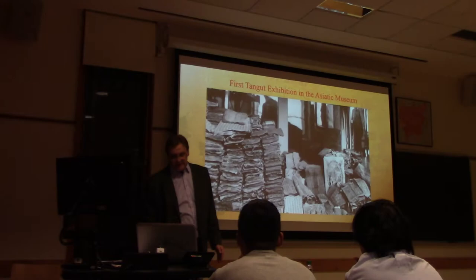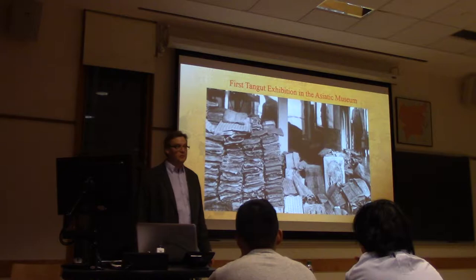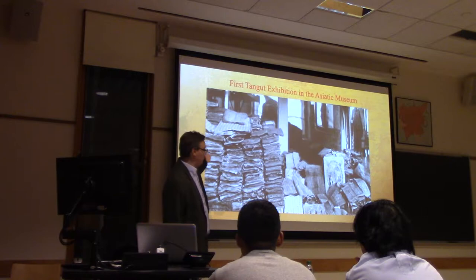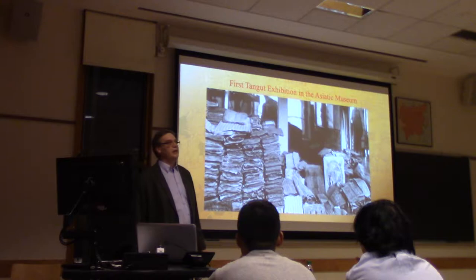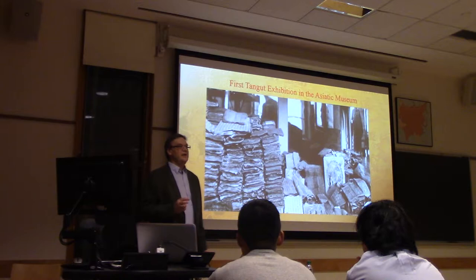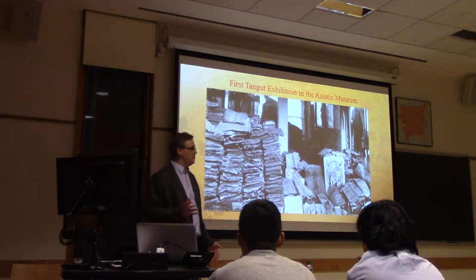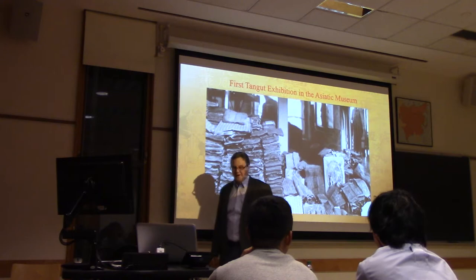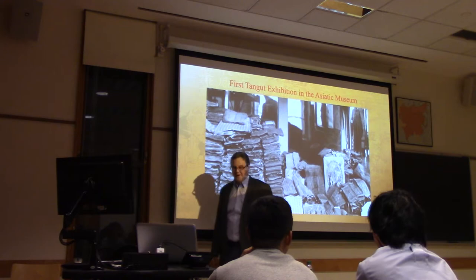What happened next is that the manuscripts, the collections, were taken to St. Petersburg, to the so-called Asiatic Museum of the Russian Academy of Sciences, or Imperial Academy of Sciences, and the first exhibition was organized. This is an actual picture from the first exhibition, if I'm not mistaken, 1910. As you can see, all those manuscripts were just presented in this way. Those of you who had a chance to visit the Institute of Oriental Studies, or Institute of Oriental Manuscripts as it is now called, in St. Petersburg, probably saw that nothing has changed much. Even that picture behind — the portrait of Matteo Ricci — it's still there. That kind of shows how the tradition maintains itself.